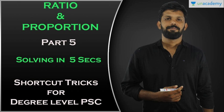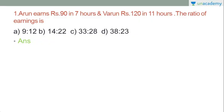In this part, we are going to solve this problem: Arun earns Rs.90 in 7 hours and Varun earns Rs.120 in 11 hours. This same question appears in degree level PSE exams. The question is: what is the ratio of their earnings?